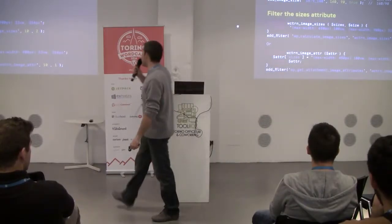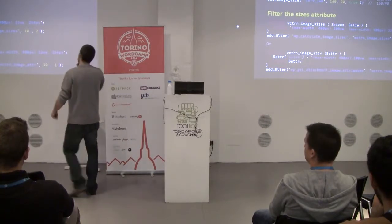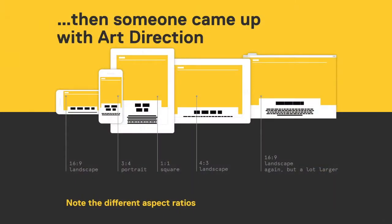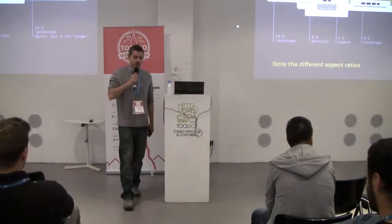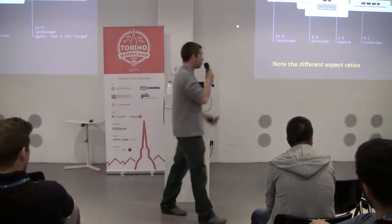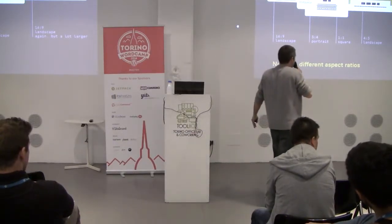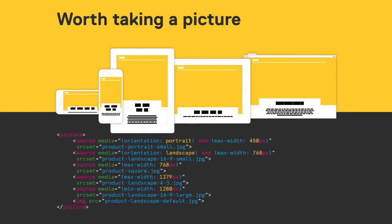All this is fine and dandy if you want to work with images with the same aspect ratio. But if someone comes up with a comp like this, srcset and sizes won't cut it anymore — look at all the different aspect ratios: small landscape, small portrait, a square, then another landscape not so wide, then again a wide landscape but larger. You just can't do this with srcset and sizes. For this you need another solution which is the picture markup.